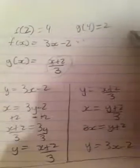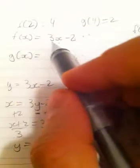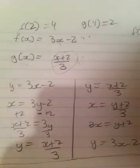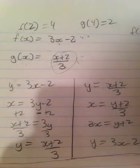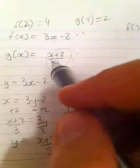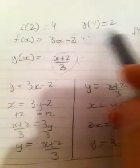This will work for any number, for example, f of 3. 3 times 3 is 9 minus 2 is 7, and g of 7 is going to equal 3. Plug 7 into here, 7 plus 2 is 9, divided by 3 is 3. So, f of 2 is 4, g of 4 is 2, f of 3 is 7, g of 7 is 3. And that's what it means for two functions to be inverses of each other.